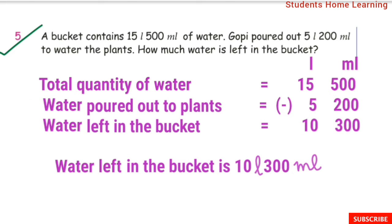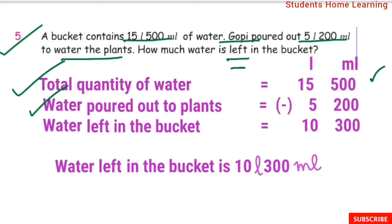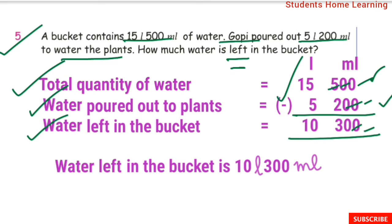Word problem 5: A bucket contains 15L 500ml of water. Gopy poured out 5L 200ml to water the plants. How much water is left in the bucket? Subtraction: 0 minus 0 is 0, 0 minus 0 is 0, 5 minus 2 is 3, 5 minus 5 is 0. Water left in bucket is 10L 300ml.